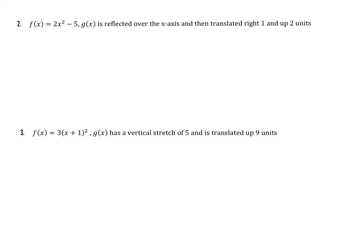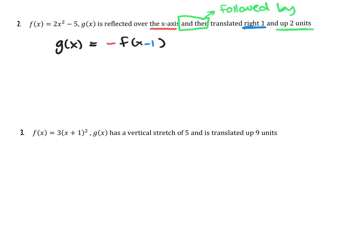Here are our next two examples. We're going to go through the same process: first write the directions in function notation, then actually perform the transformation on the function. So g of x is reflected over the x-axis — over the x-axis is outside, so reflecting on the outside. Then 'and then' indicates a 'followed by' situation, so I need to check the order. It's translated one to the right and two up. One to the right happens inside; it's the only horizontal transformation so we don't need to worry about that order.